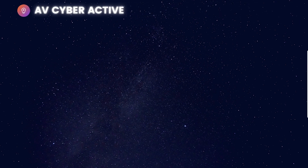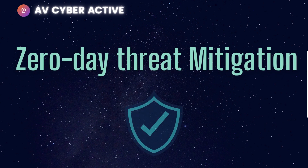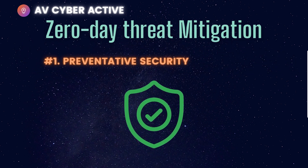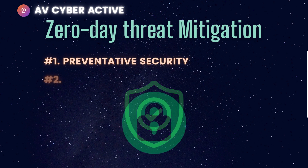This video wouldn't be complete without discussing how to manage or mitigate zero-day threats. Number one: preventative security. The best way to mitigate damage from a zero-day attack is to prevent it from happening in the first place. You do this by maintaining good security hygiene — a good firewall policy, up-to-date antivirus or EDR (Endpoint Detection and Response) policies, and making sure you stay in touch with vendors to keep everything regularly updated.